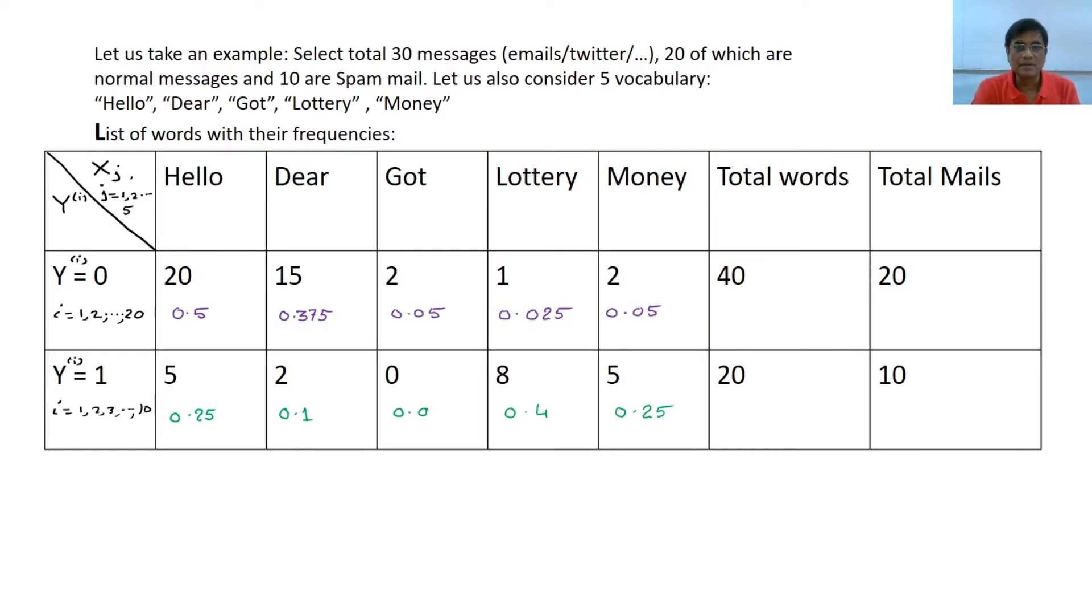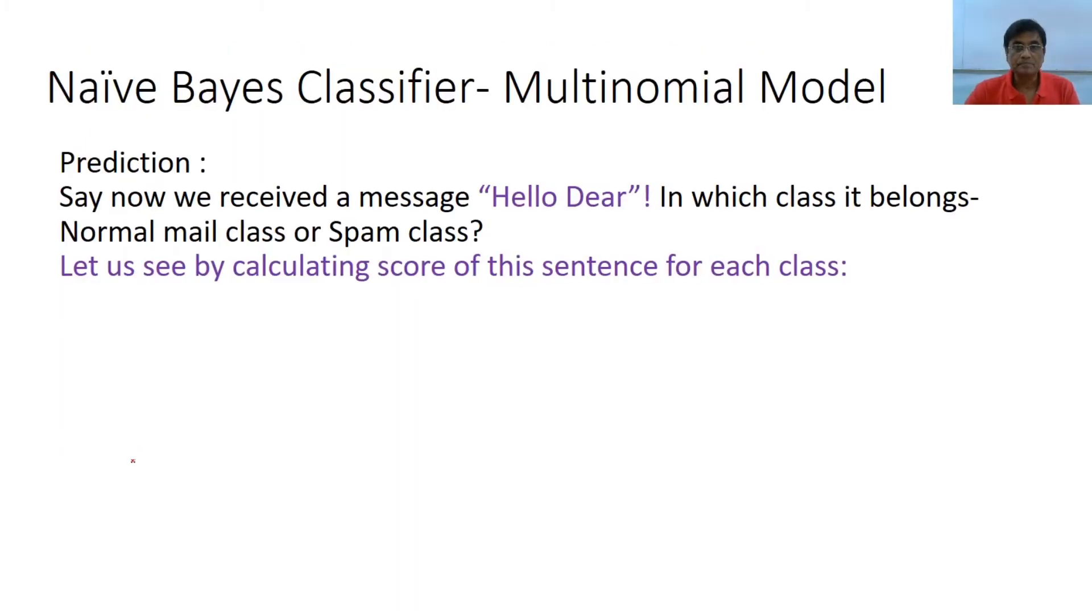So we took an example the other day and we calculated. We took the ridiculously small vocabulary of 5 words and we calculated 2 classes - we have spam and normal - and we calculated the probabilities of occurring each word, seeing each word in each class. And this is my training sample. Today now we will use this for, and we have developed the model, now we will use it for prediction.